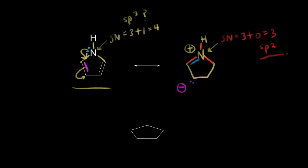Since we know that lone pair is delocalized, it's going to occupy a p orbital — so this nitrogen is sp2 hybridized with three sp2 hybrid orbitals and one p orbital. The lone pair in blue is actually delocalized, occupying a p orbital. If you look at the nitrogen at an angle: with sp2 hybridization it has a p orbital, and the electrons in blue, being delocalized, occupy that p orbital and can participate in resonance.